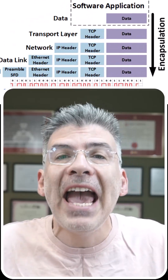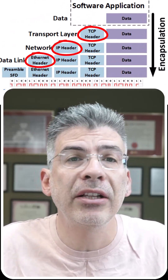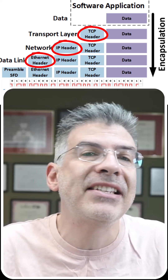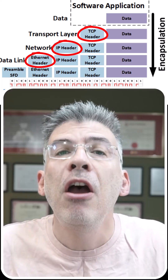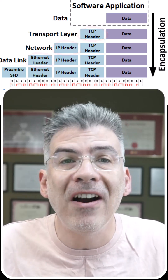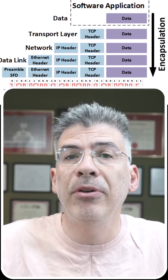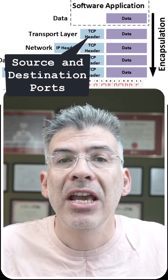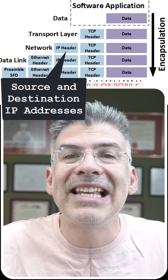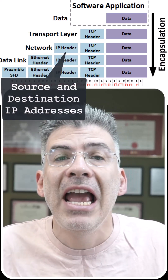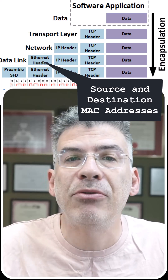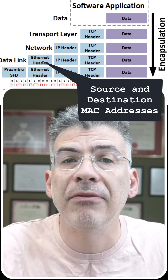At each layer, specific headers, and sometimes trailers, are added to the data to provide the necessary information for that layer's function. For example, the transport layer adds port numbers, the network layer adds IP addresses, and the data link layer adds MAC addresses and frame information.